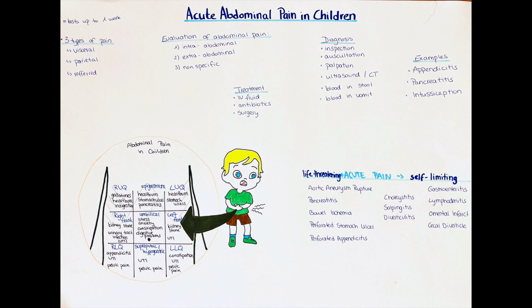Abdominal pain can have many different origins and can be very different in location, intensity and duration. Acute abdominal pain is defined as pain in the abdomen that lasts for less than one week. As always in medicine, the most common diseases are the most commonly seen ones, so in an infant with acute abdominal pain there is a high chance of intussusception, while an older child most likely suffers from appendicitis.